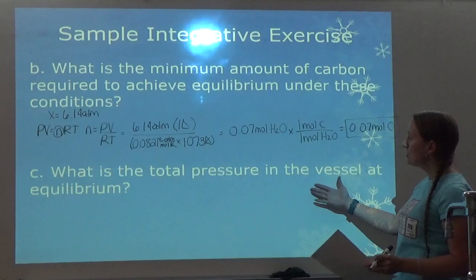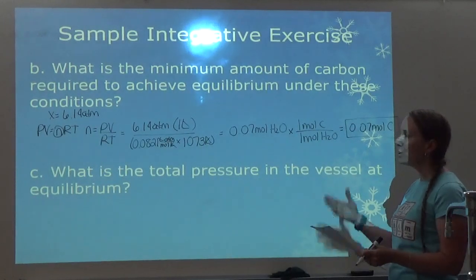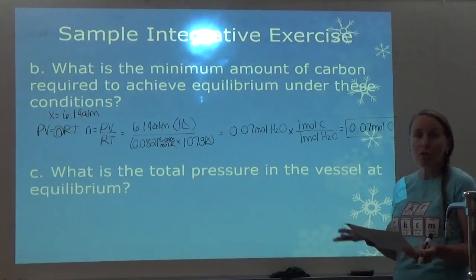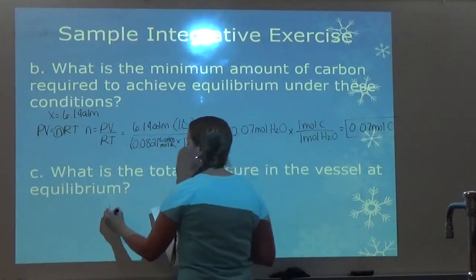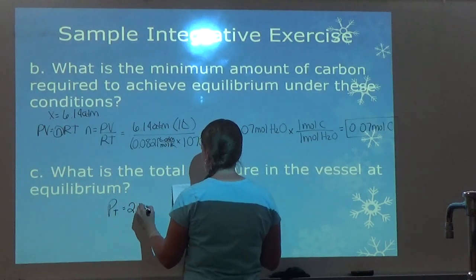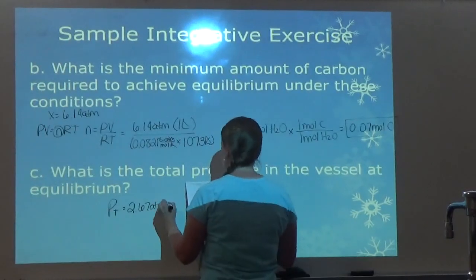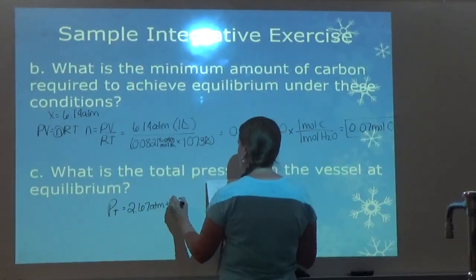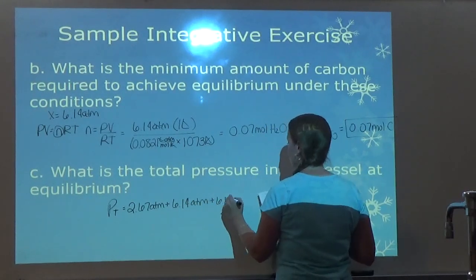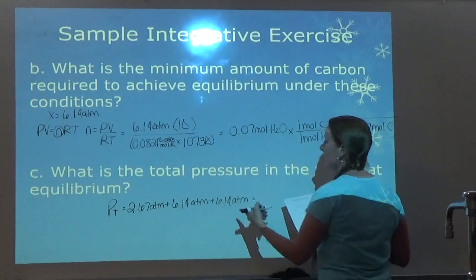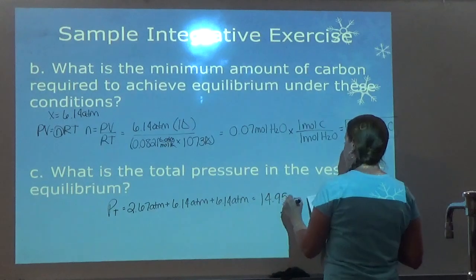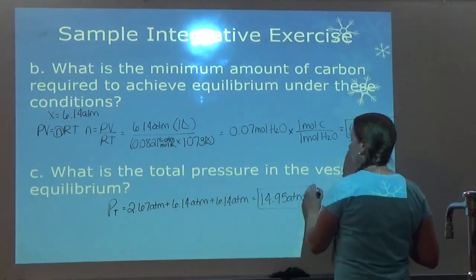Part C: what is the total pressure at equilibrium? I add the three partial pressures from part A: 2.67 ATM for water, plus 6.14 ATM for CO, plus 6.14 ATM for H2, giving a total pressure of 14.95 ATM.